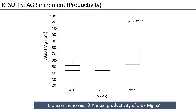In terms of productivity between 2015 and 2019, we have observed an annual productivity of almost 4 megagrams, or 4 tons of biomass per hectare of forest.